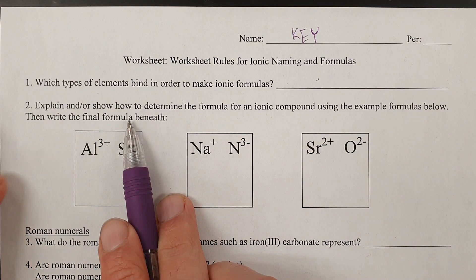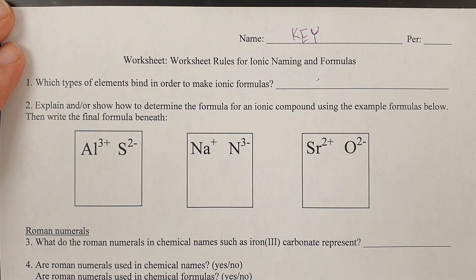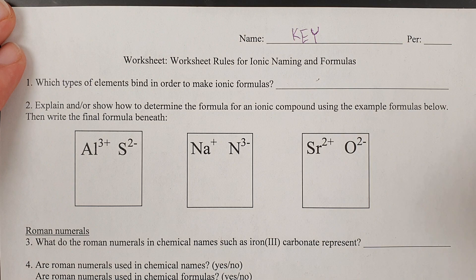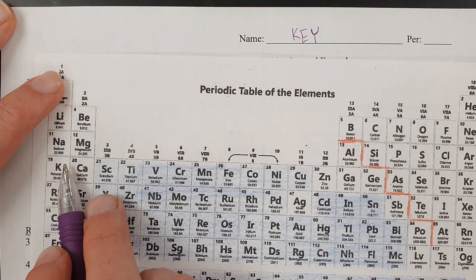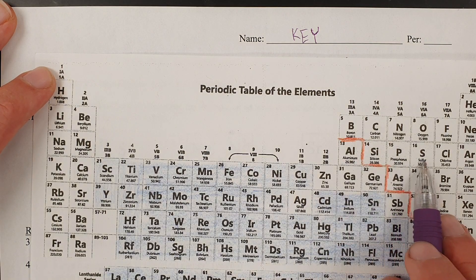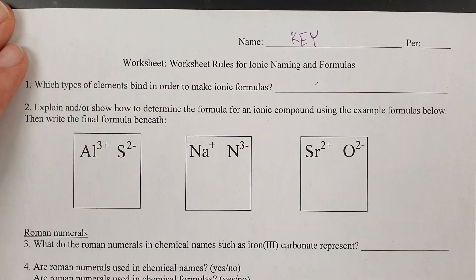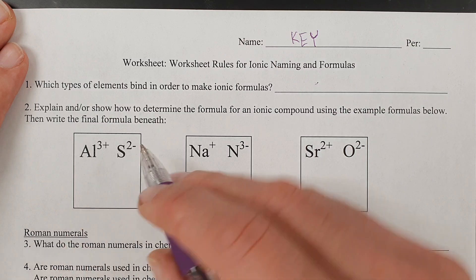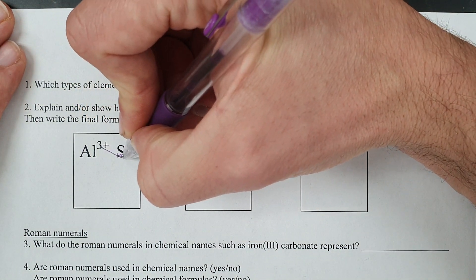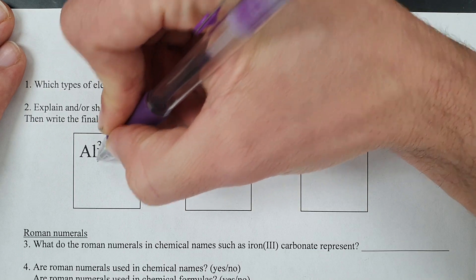Explain how to find the formula. If you have an element, you need to figure out its charge. Here I'm being easy on you and giving you the charge already done. If you don't know the charge, you have to figure out that this is plus 1, plus 2, plus 3, minus 3, minus 2, minus 1, and 0. Once you figure out the charge, remember how you switch the charges — bring this 3 down here, bring this 2 down here. Forget the pluses and minuses, they don't matter.